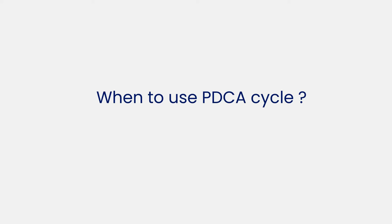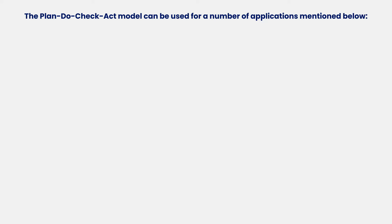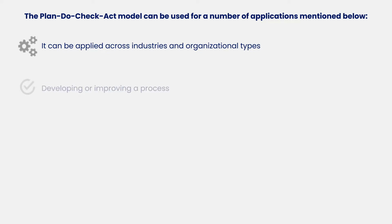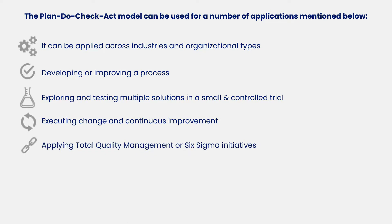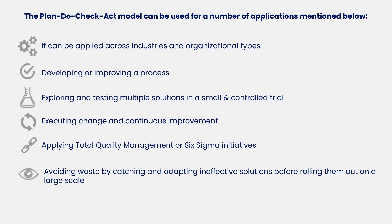Now let's learn when to use the PDCA cycle. The Plan, Do, Check, Act model can be used for a number of applications. It can be applied across industries and organizational types. It can be used for developing or improving a process, or to explore and test multiple solutions in a small and controlled trial. It can also be used for executing change and continuous improvement, applying total quality management, or Six Sigma initiatives, and avoiding waste by catching and adapting ineffective solutions before rolling them out on a large scale.